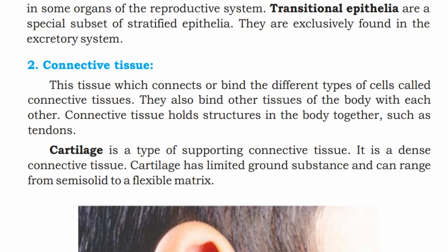Assalamualaikum, welcome to Student Tube. Today in this lecture, 9th class biology chapter 4, the topic is connective tissue. This is the tissue which connects or binds the different types of cells — it is called connective tissue. The cells connect and bind, and they also bind other tissues of the body with each other.